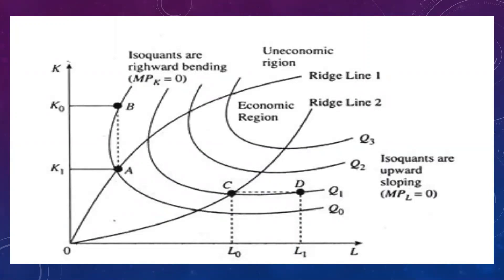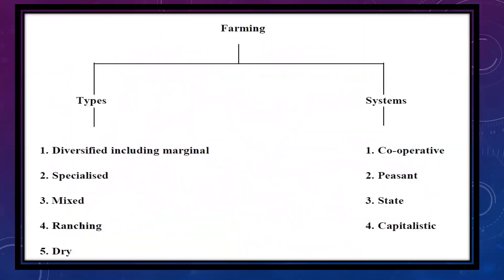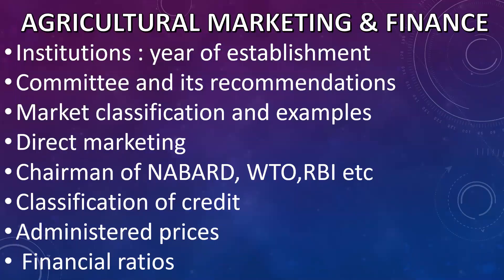Next is farm types and systems. Under types, we have diversified, specialized, mixed, ranching, and dry farming; whereas in systems we have cooperative, peasant, state, and capitalistic — look at the definitions. Under cooperative, there are four classifications: better cooperative, joint cooperative, and others — just revise all of them. Any definition or identification of type can be asked.